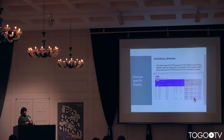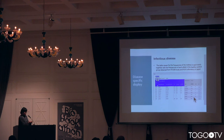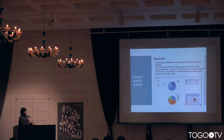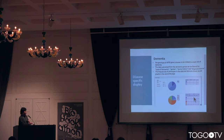Our target is five disease areas for now, so we provide a disease-specific display. For example, we are collecting HLA-typing data, so we provide a table viewer for the frequency of HLA-typing data. Another one is the ApoE gene, which is a gene related to dementia — we provide genotype information about the ApoE gene.